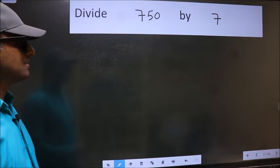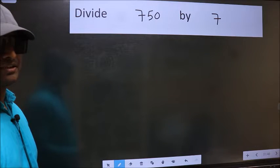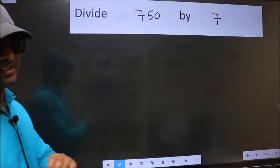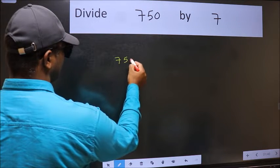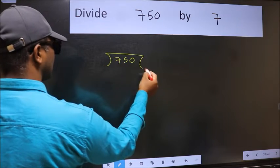To divide 750 by 7, we should frame the division this way: 750 here and 7 here.